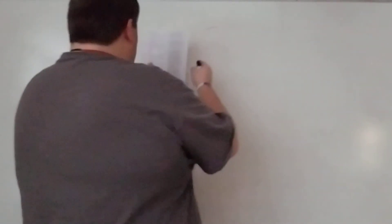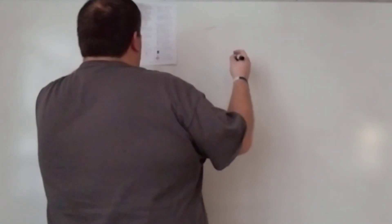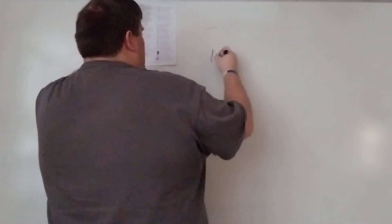Number fourteen: is it a geometric sequence? Yes, because you're multiplying by one-half each time. Each term is one-half of the previous one, so it has a common ratio of one-half — confirming it's a geometric sequence.